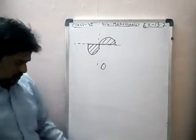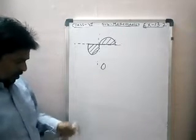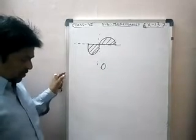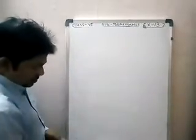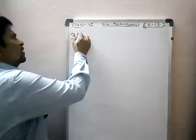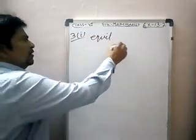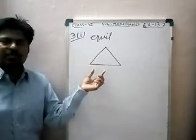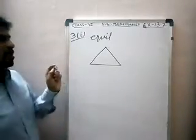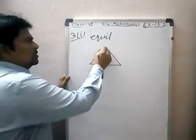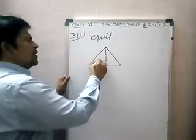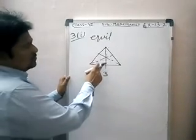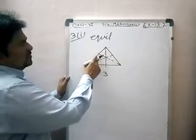Next, question number three — complete the following table. Shape given, number of lines of symmetry. First part: equilateral triangle. An equilateral triangle means all three sides are the same. Lines of symmetry possible: first line, second line, and third line — three lines of symmetry possible. All six parts are the same.